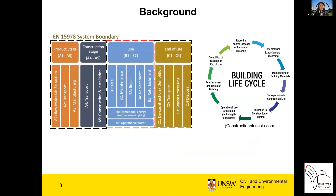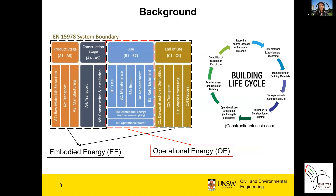A building consumes energy throughout its whole life cycle. The EN standard classifies building life cycle into several stages. All the energy consumption during material production, transportation, on-site construction, maintenance, demolishing, and disposal is called Embodied Energy, or EE. The energy consumption in the use stage is called Operational Energy, or OE.